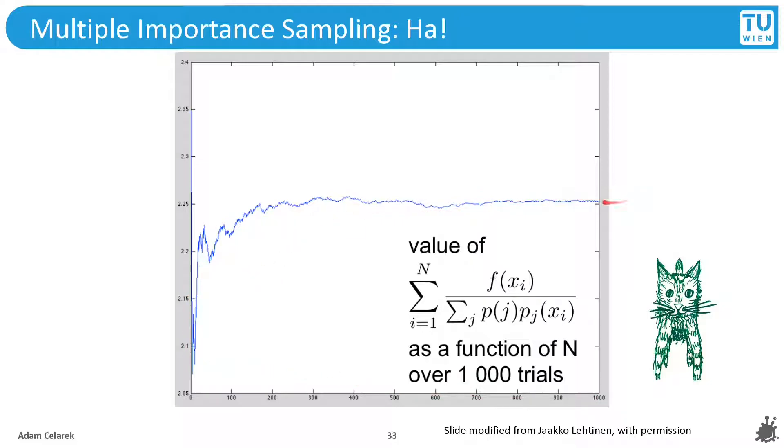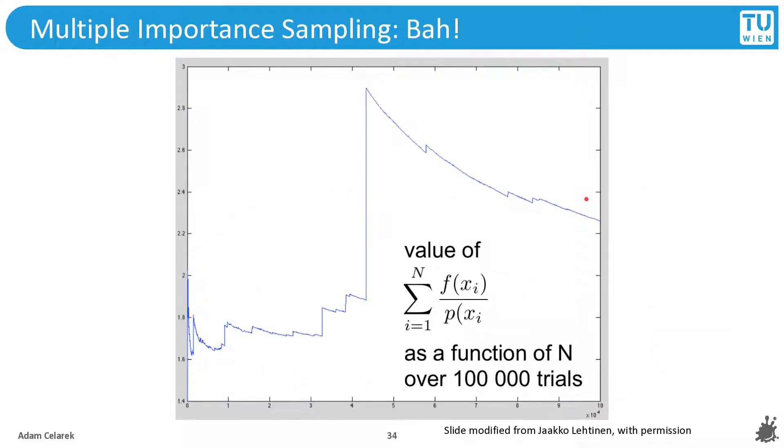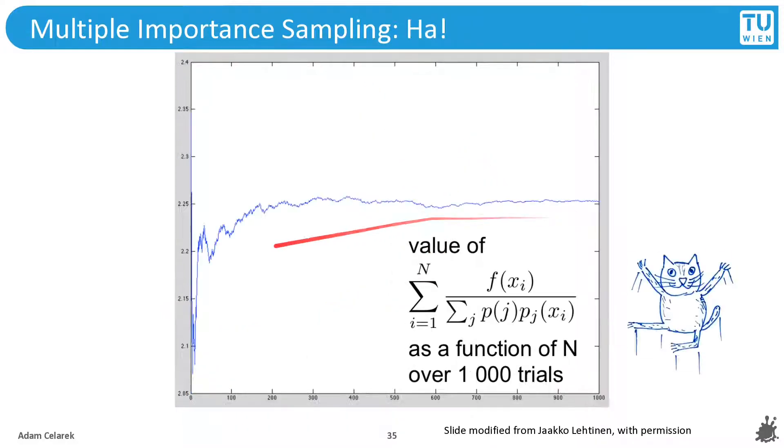When we use the same plot to look at the running average of those with 1000 samples, you can see that it stabilizes pretty quickly. And this is compared to what we had before with the importance sampling only. You saw those wild jumps. You see them again. And this looks much better. So we are happy.